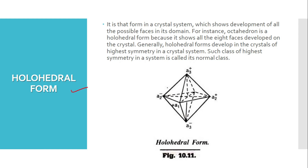Now let's look at holohedral forms. In a holohedral form, a crystal system shows development of all possible faces in its domain. For example, in an octahedron all eight faces are developed in the crystal. The most important feature of holohedral forms is that they show the highest symmetry in a crystal system. Generally, the class of highest symmetry in a crystal system is called its normal class.